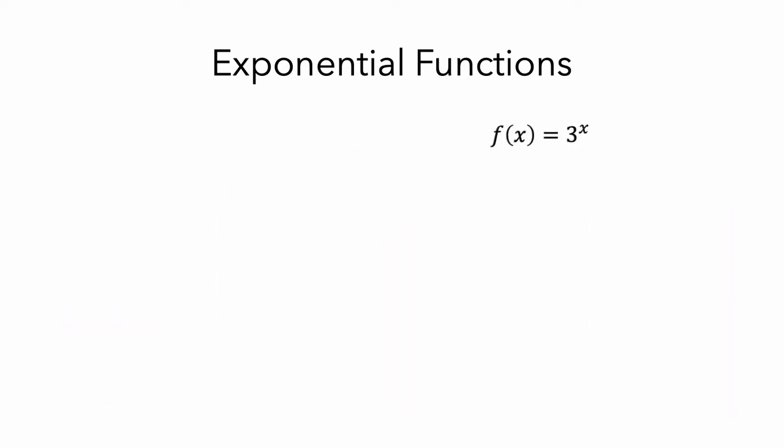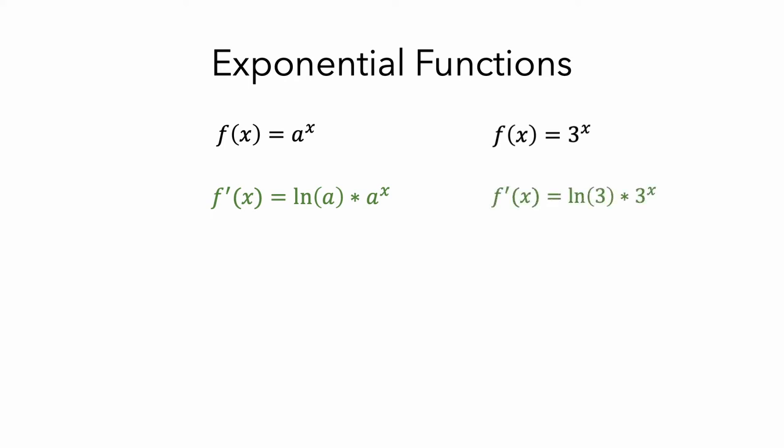It turns out that if you have a general exponential function f equals a to the x, then its derivative is f prime of x equals ln of a times a to the x. So in the example here, the derivative is f prime of x equals ln of 3 times 3 to the x. Keep in mind that ln of 3 means the natural log of 3, which is just a number. So the derivative of an exponential function f of x is a constant multiple of f of x, and that's why the graph of f prime of x had the same basic shape as the graph of f of x.